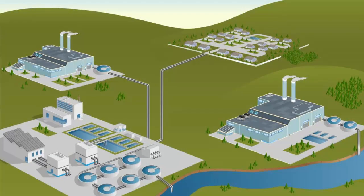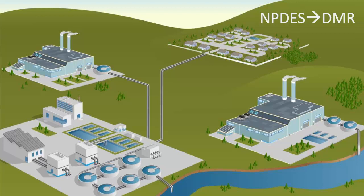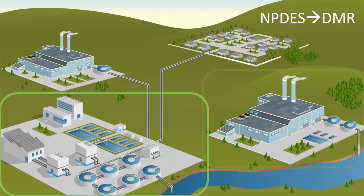EPA and states collect DMR data under the National Pollutant Discharge Elimination System, or NPDES, program. The Clean Water Act prohibits anybody from discharging pollutants through a point source into a water of the United States unless they have a NPDES permit. The NPDES permit will contain limits on what can be discharged, monitoring and reporting requirements, and other provisions to ensure that the discharge does not hurt water quality or human health. In essence, the permit translates general requirements of the Clean Water Act into specific provisions tailored to the operations of each facility discharging pollutants. Facilities with NPDES permits report compliance with permit limits through DMR submissions. Facilities that report DMRs include industrial direct dischargers and POTWs.